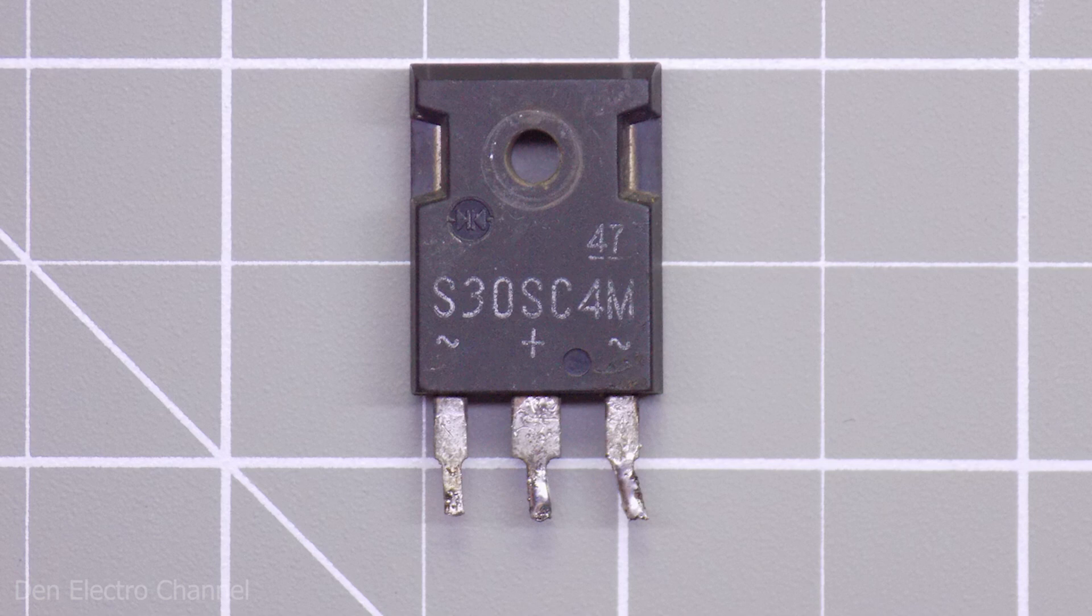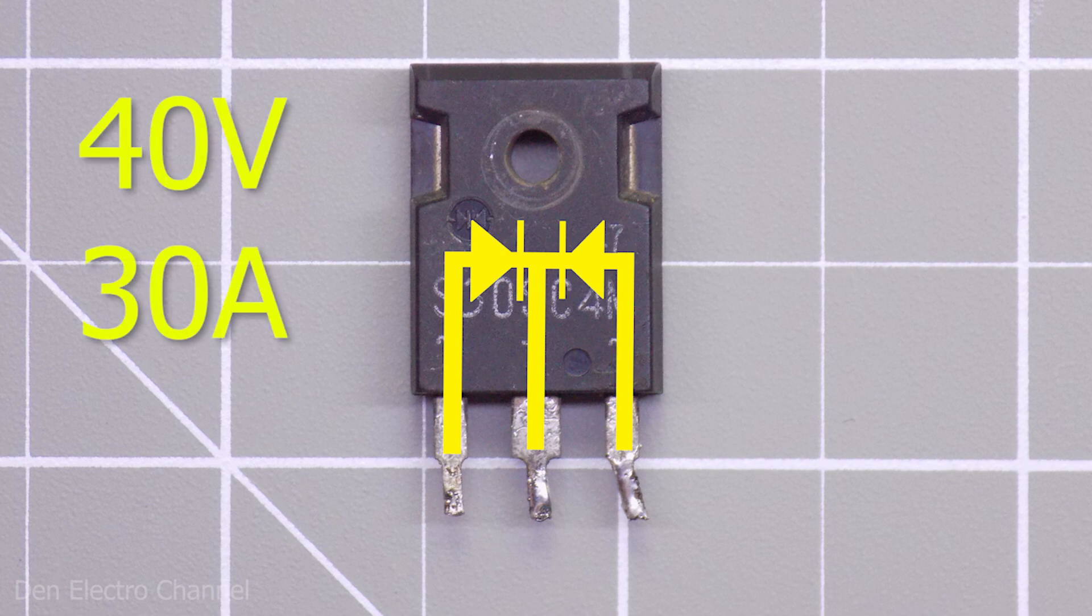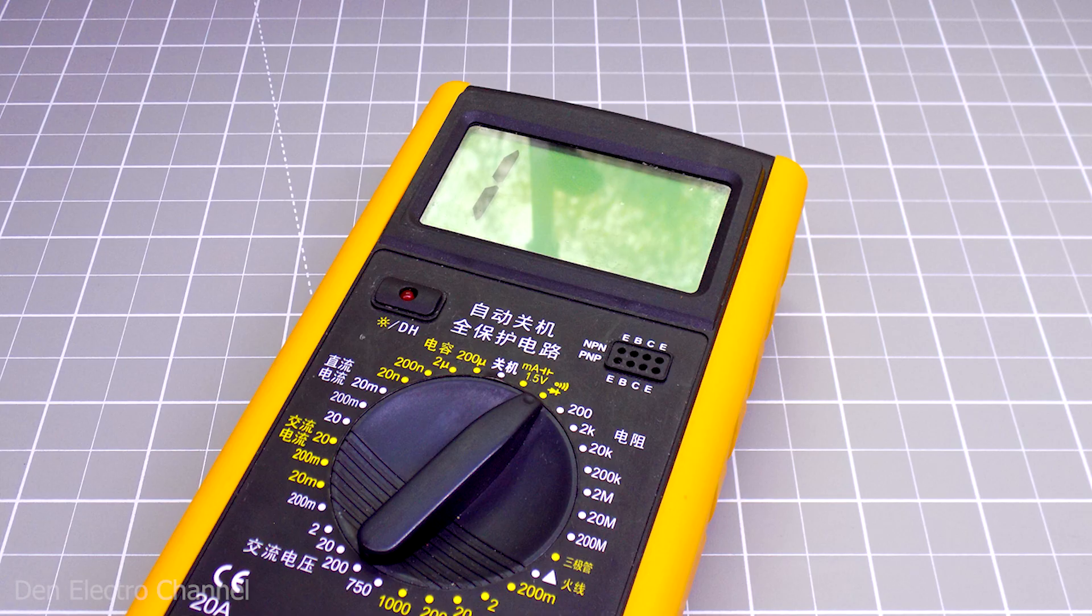Let's conduct a test on dual Schottky diodes S30SC4M. It is designed for 40 volts, 30 amperes, but each of the diodes can withstand only 15 amperes. I will check only one diode.